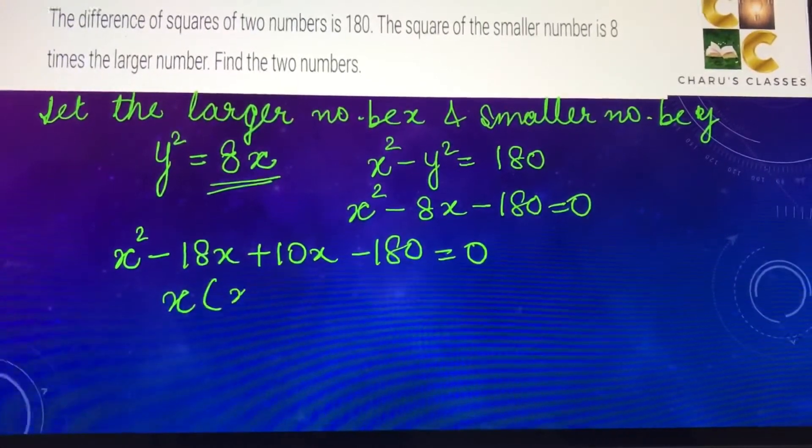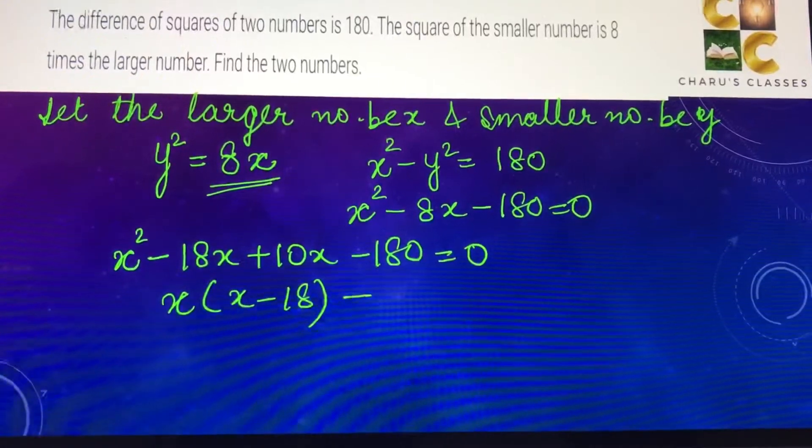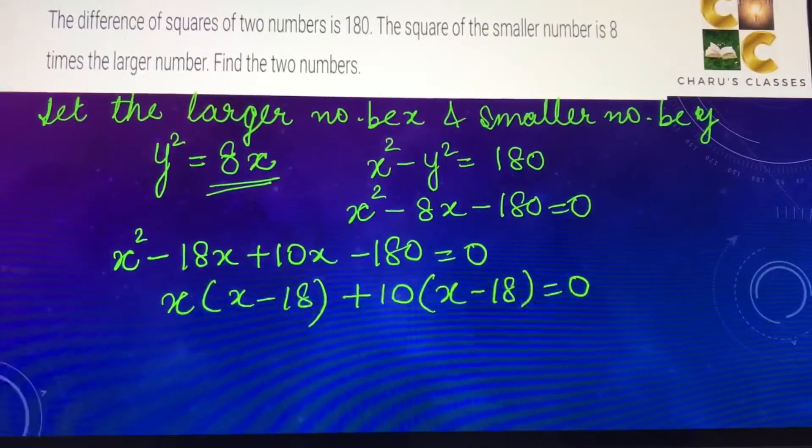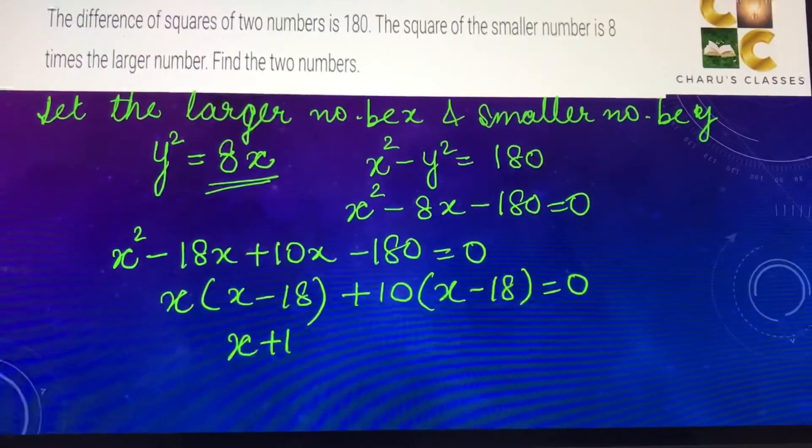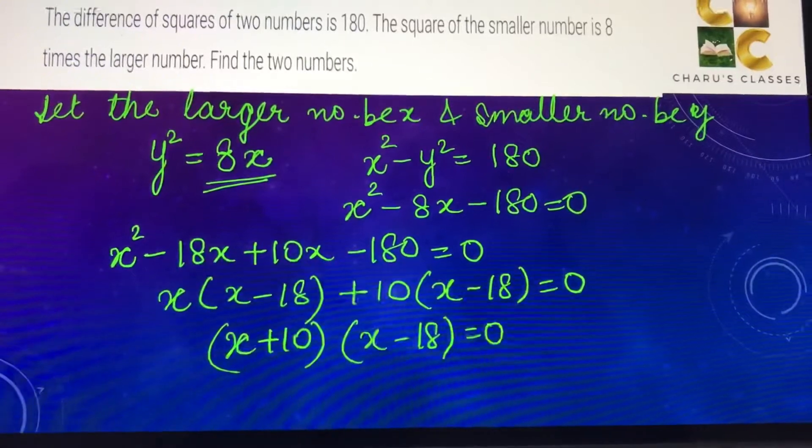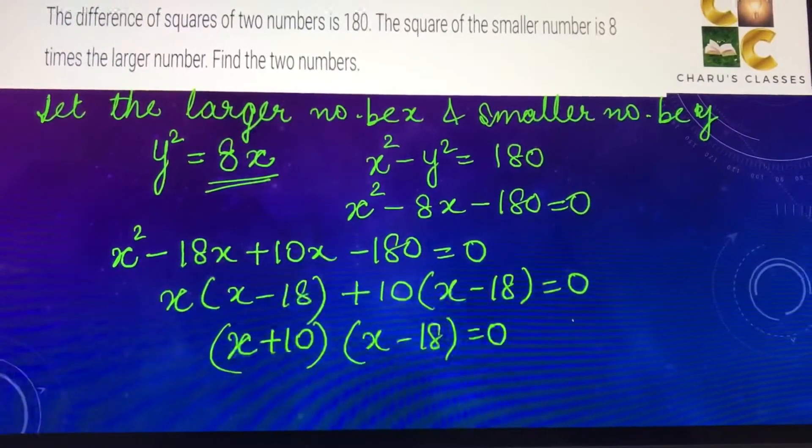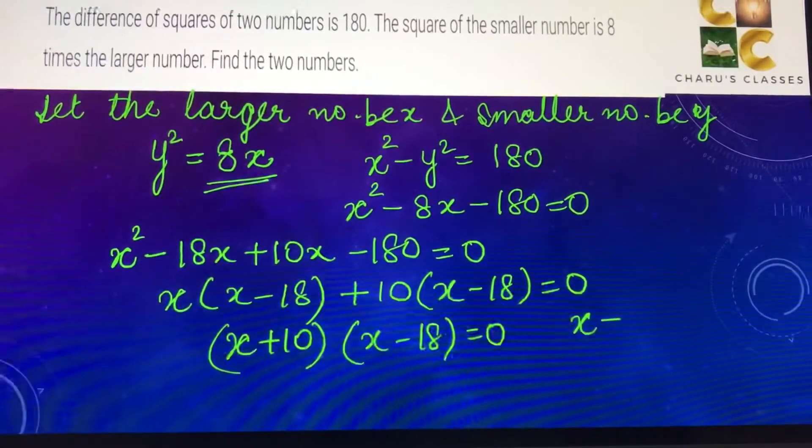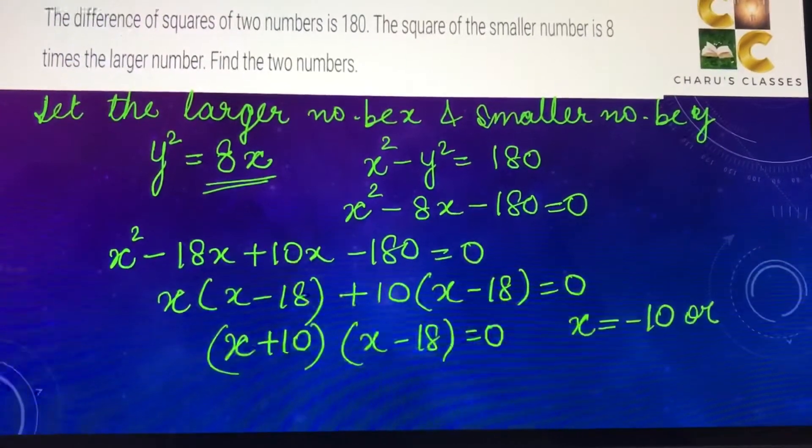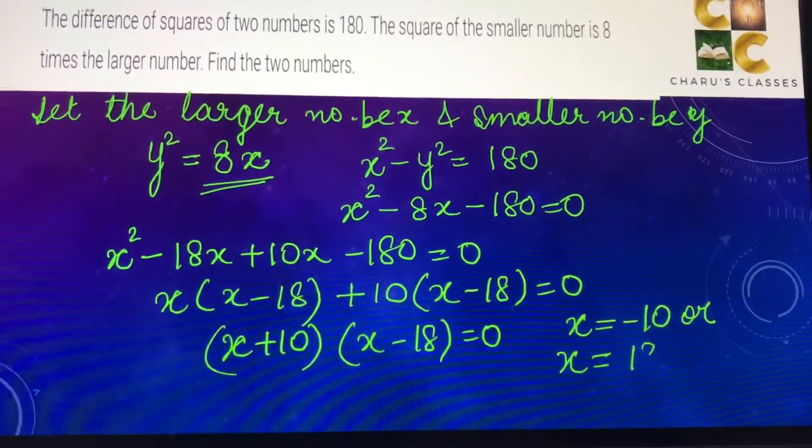Taking x common from the first two terms, x(x - 18) + 10(x - 18) = 0. So I can have (x + 10)(x - 18) = 0. So either x + 10 = 0, which means x = -10, or x = 18.